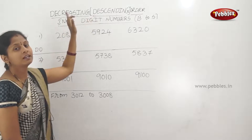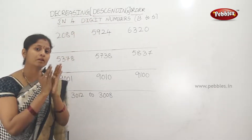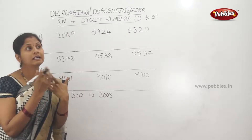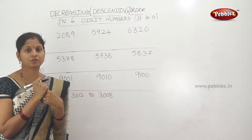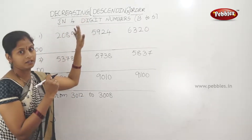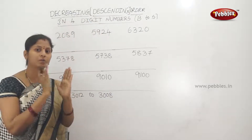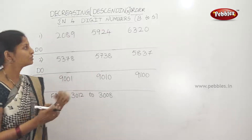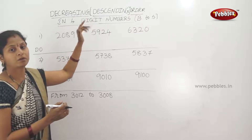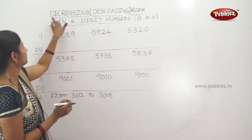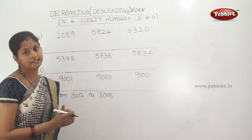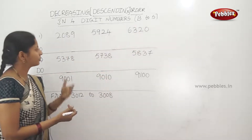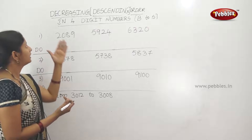Descending and decreasing both start with D. Descending order and decreasing order mean arranging numbers from the biggest number to the smallest number. Ascending and increasing order go from small to big. Descending and decreasing go from big to small — biggest number to smallest number.